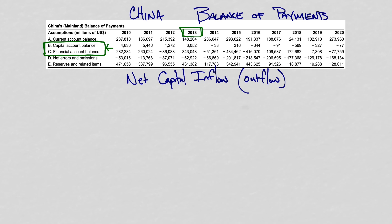If these are capital inflows that we're looking at — these are inflows. We can tell they're inflows for China, at least, because they're positive numbers. If you see where these little red dots are, that's what we're looking at: the $3,000 and the $343,000. To calculate the net capital inflow for 2013 for China, we just add these two numbers up.